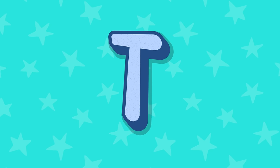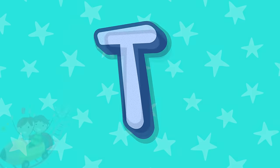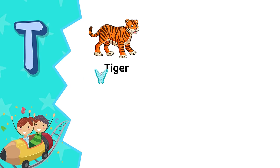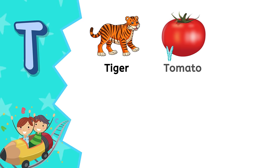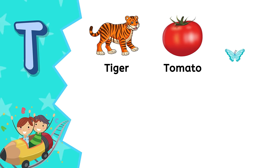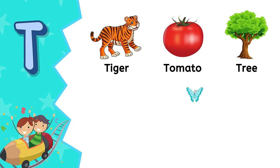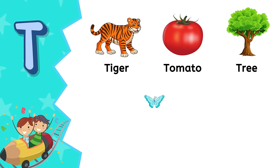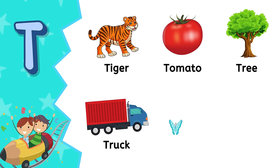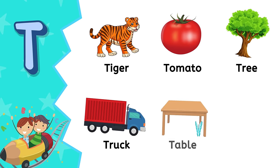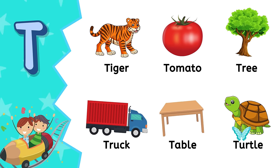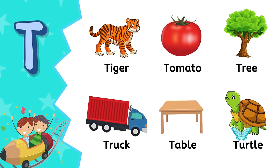T. T is for tiger. T is for tomato. T is for tree. T is for truck. T is for table. T is for turtle.